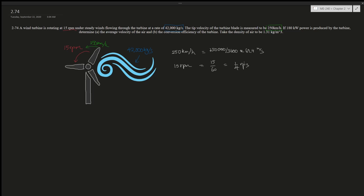A full rotation gives you a distance, and distance is an important factor in doing work — force times distance gives us work. A full rotation gives you the circumference, which gives you the diameter, which gives you the radius, and then the area of the entire cross-section of the wind turbine. This is rotation per second.